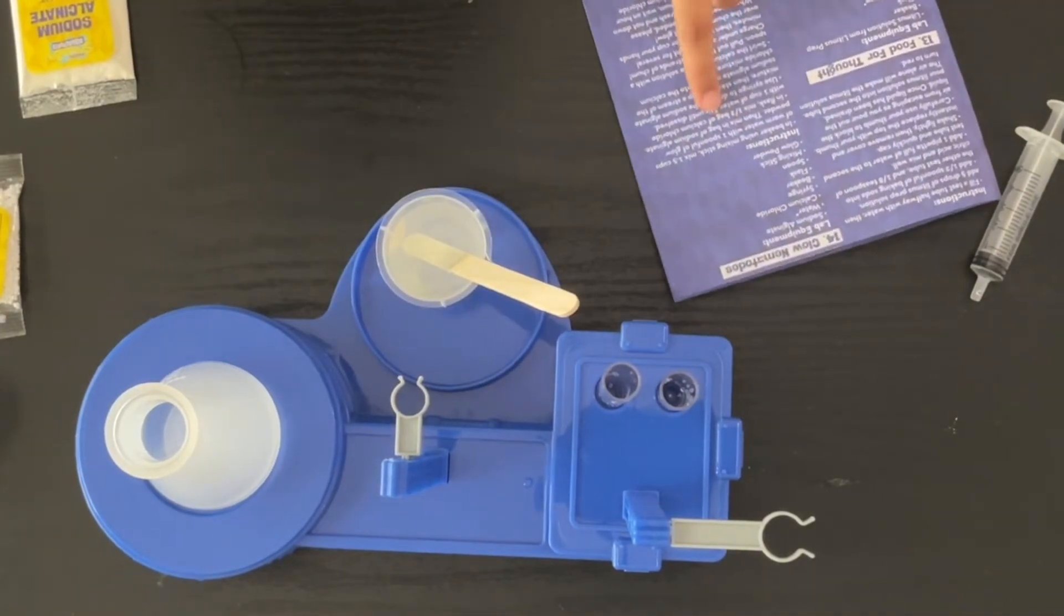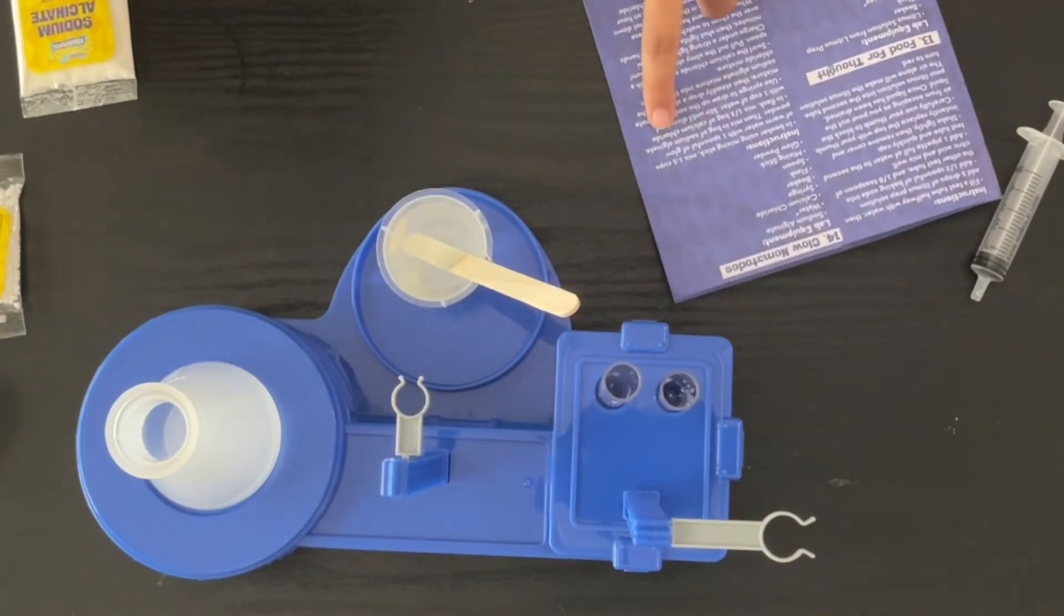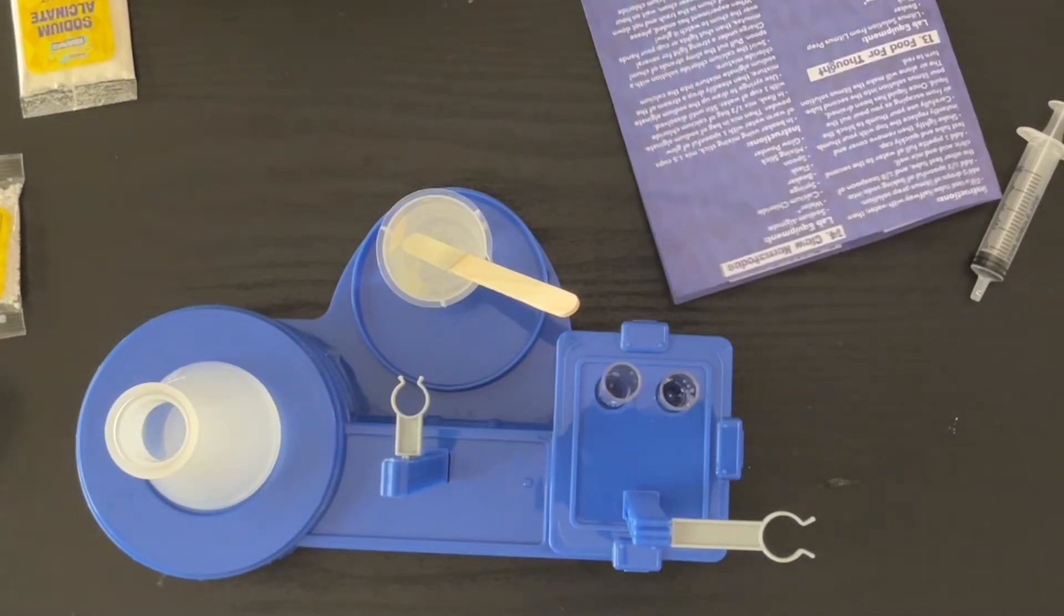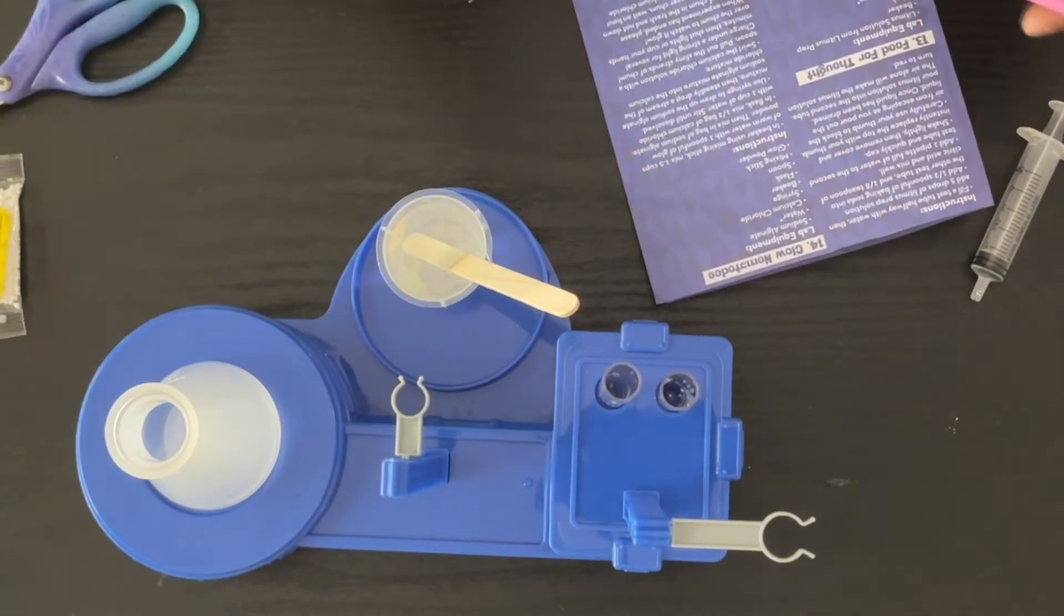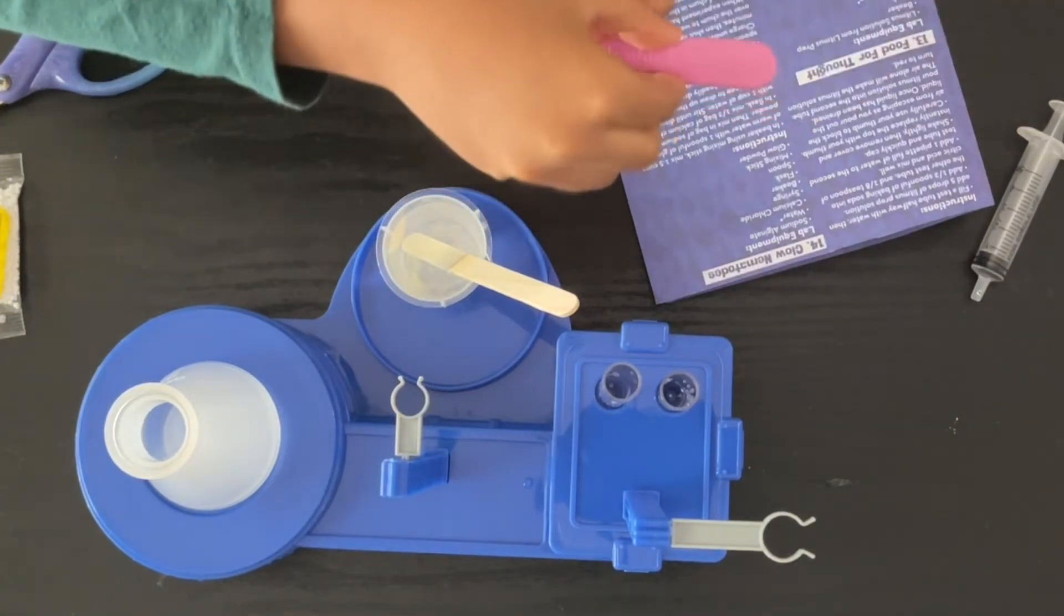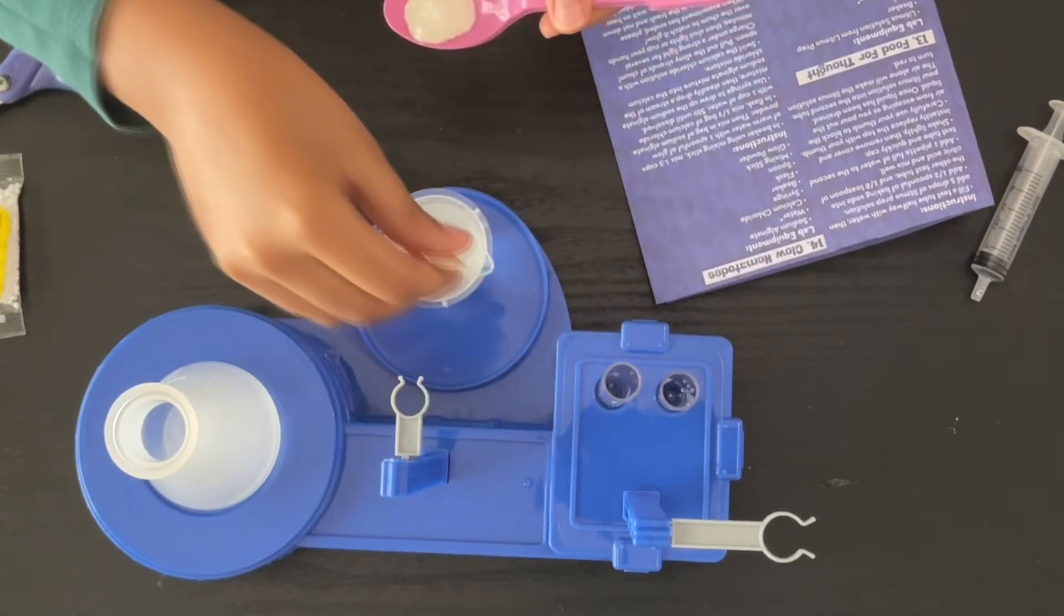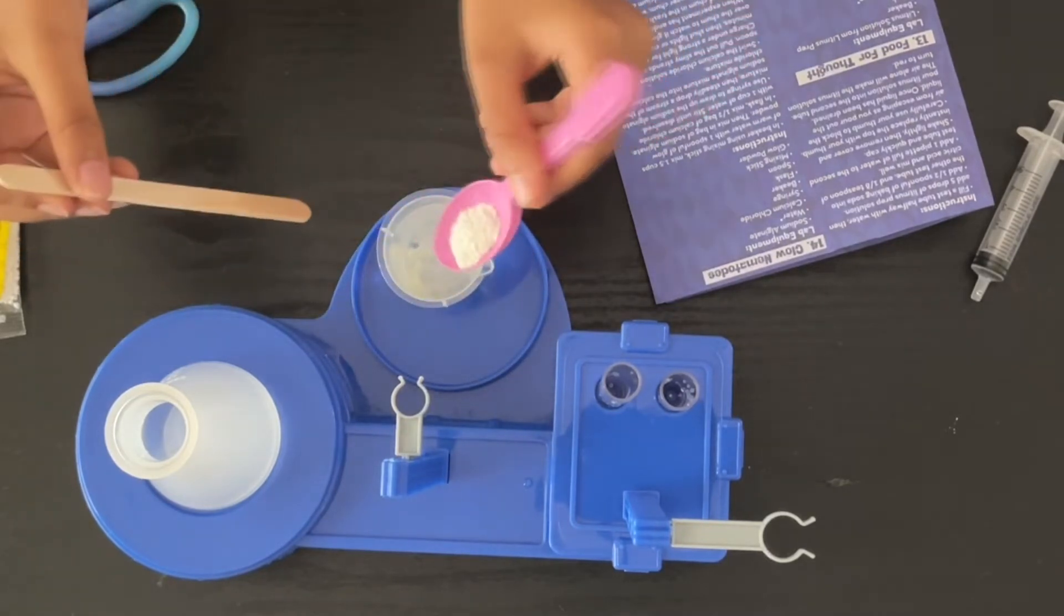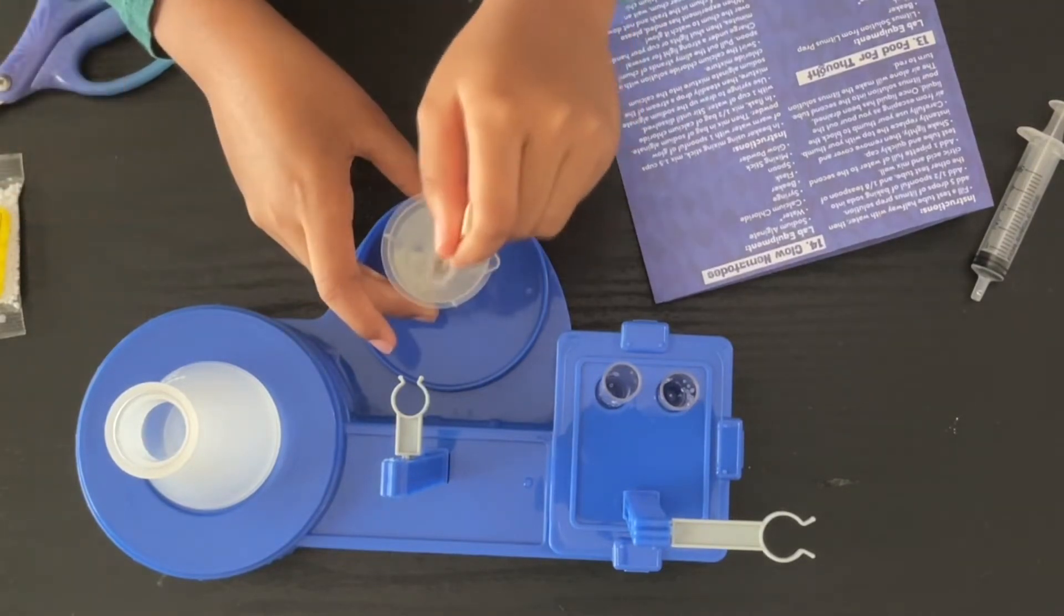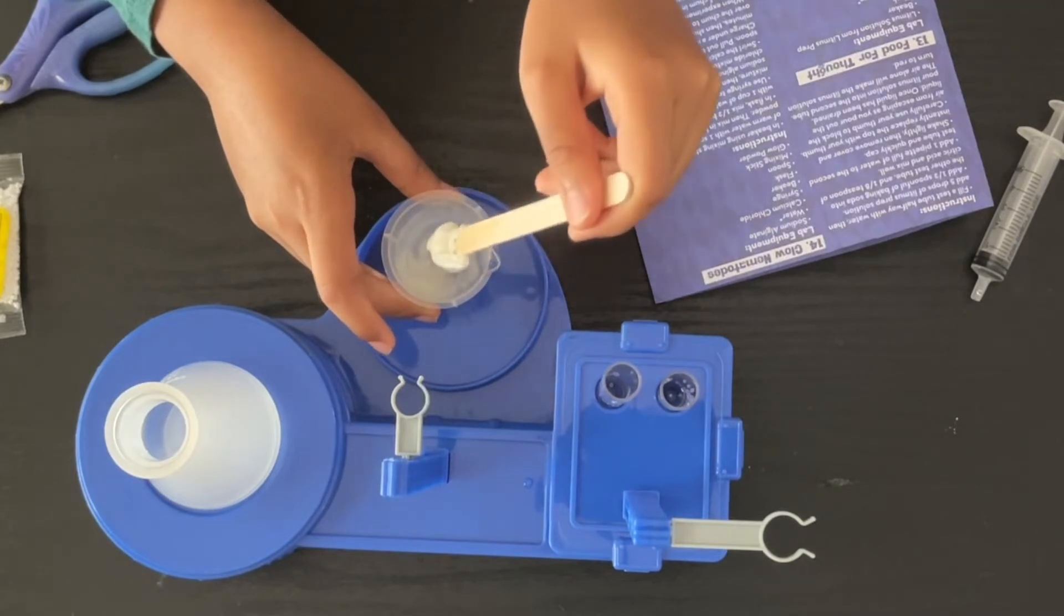Then mix in bag of sodium alginate. We'll not mix the whole bag because we're doing it in ratio. Let's take in the spoon about one-twelfth of the whole box. Mix it. It's sticky.